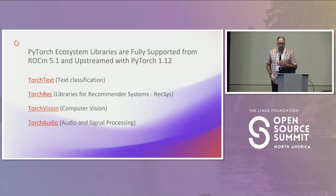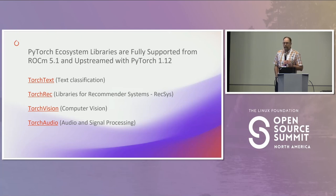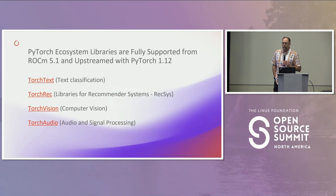On the ecosystem side, there are quite a few libraries within PyTorch. As of the PyTorch 1.12 release, four core components were enabled with the ROCm ecosystem: text classification, recommender systems, computer vision libraries, as well as support for audio and signal processing.